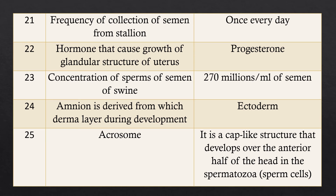Question 22: Hormone that causes growth of the glandular structure of the uterus. Answer: Progesterone is responsible for growth of the glandular structure of the uterus. Question 23: Concentration of sperm in semen of swine. Answer: 270 million per ml of semen.